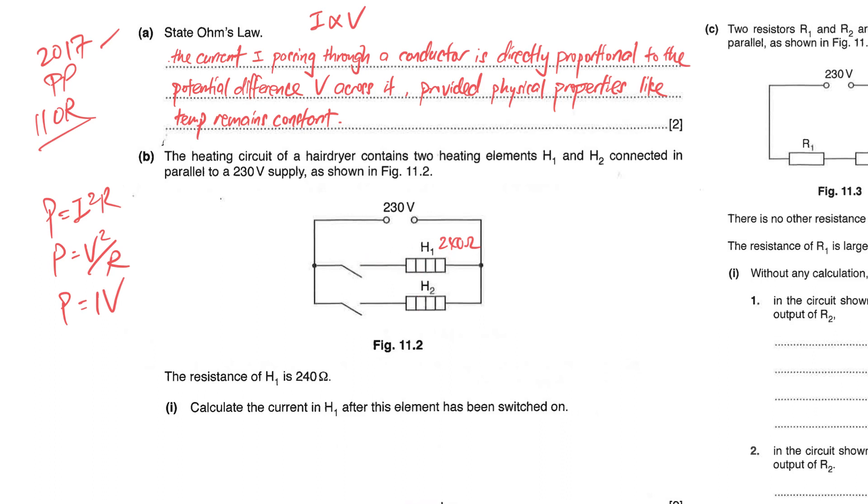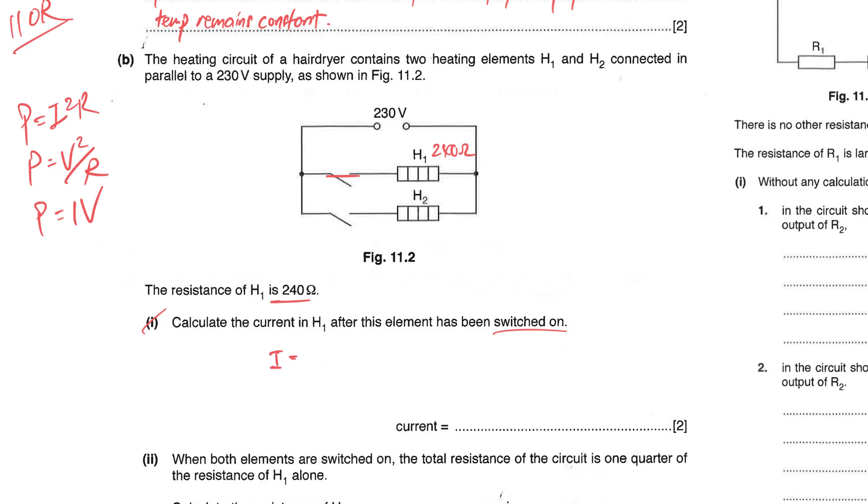Let's go through Part A. Part one: calculate the current in H1 after this element has been switched on. So that means the switch is closed here. It's very straightforward. I'll be using V equals to IR, so I equals to V over R which is 230 divided by the resistance 240 ohms, and you'll get 0.958 ampere.